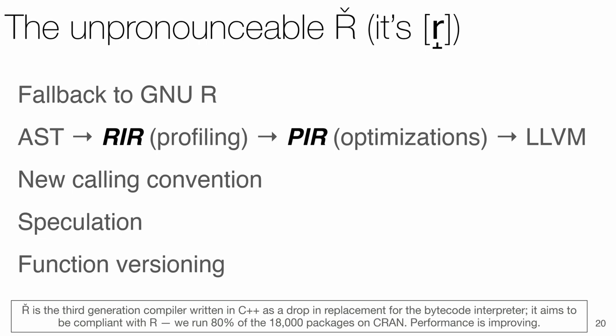I will introduce three of the techniques we use. First, we came up with a different calling convention for Peer. Second, we make heavy use of speculation. And third, we compile multiple versions of functions based on the contexts in which they are called.